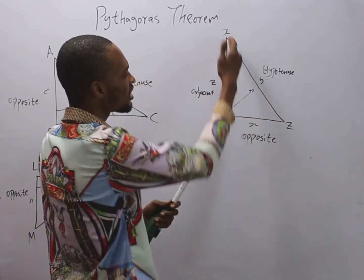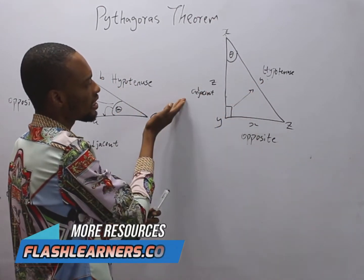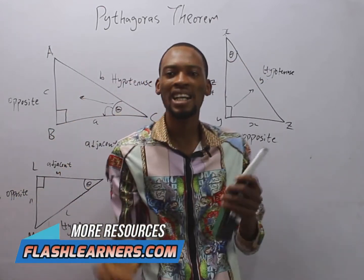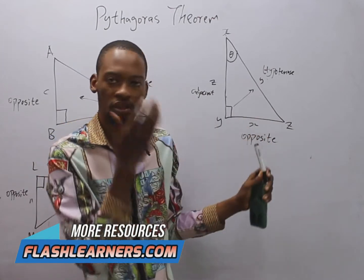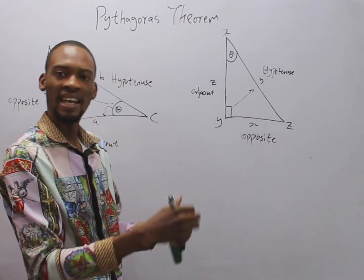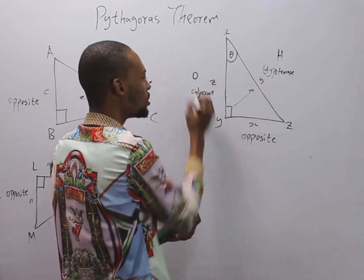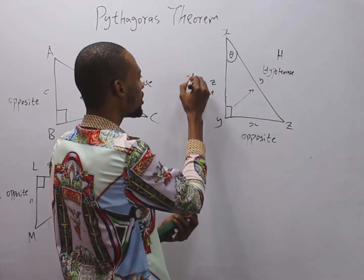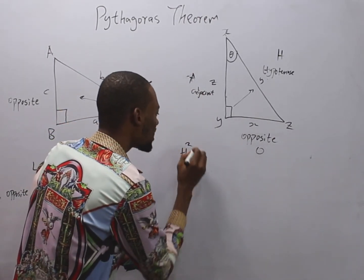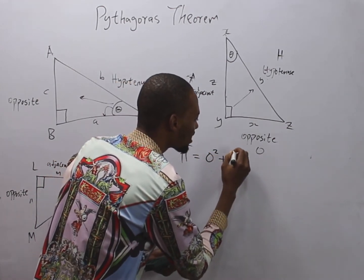Even if you switch the triangle this way, the part directly facing the acute angle theta is the opposite, the other part is the adjacent, and the longest part is the hypotenuse. So no matter how it is flipped, you need to know these names. Pythagoras says that in a right-angled triangle: letting hypotenuse be h, opposite be o, and adjacent be a, then h² = o² + a².